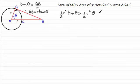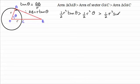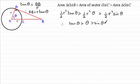This area is greater than the area of triangle OAC. For triangle OAC, I've got two sides and the included angle, so I can use the formula: half of the product of those two sides — that's R times R, so R squared — times the sine of the included angle theta. Now if I divide each of these terms by one half R squared, I'm left with: tan theta is greater than theta is greater than sine theta. This is an inequality which I'll be coming back to, so I'll number it 1.